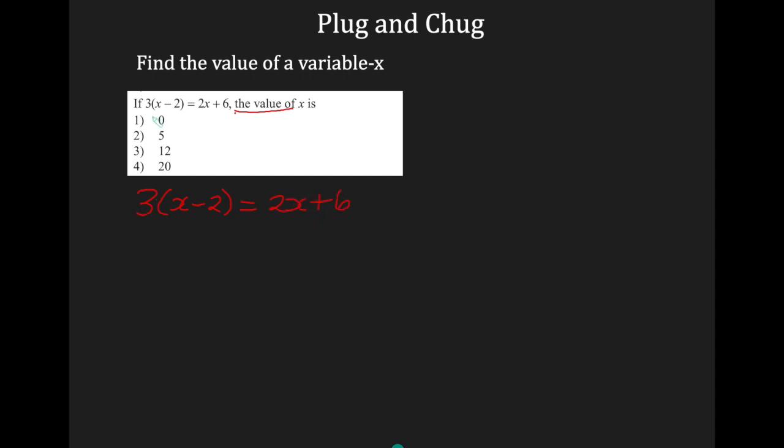We're going to plug in 0, which is our first option. So 3 times 0 minus 2 equals 2 times 0 plus 6. We're going to use PEMDAS or order of operations. Parentheses first. So 0 minus 2 is negative 2. And when I multiply 3 times negative 2, I get negative 6. Let's see what we get on the right-hand side. I have multiplication and addition, so I'm going to multiply first. 2 times 0 is 0. And when I add 0 to 6, I get 6. Now, negative 6 does not equal positive 6. Therefore, 0 is not my answer. So 0 is not the value for x.